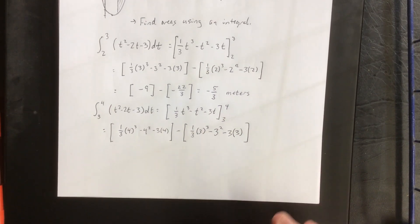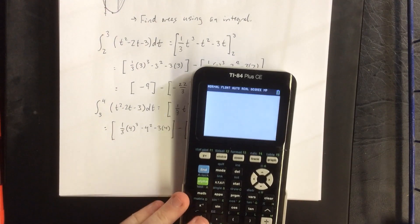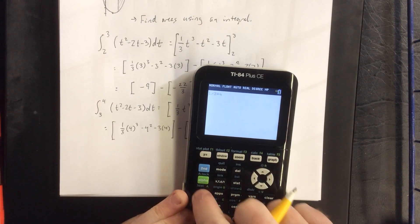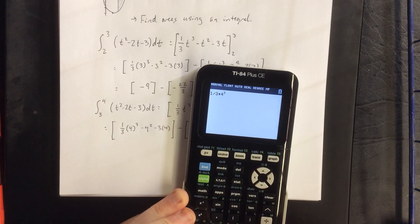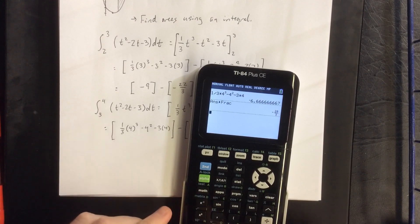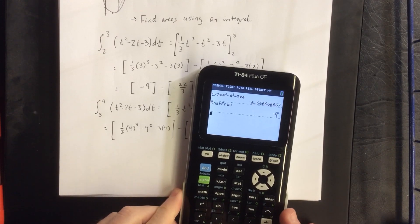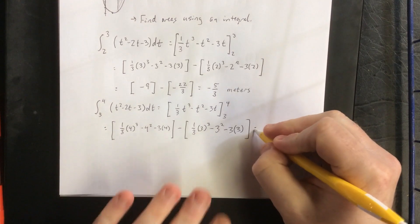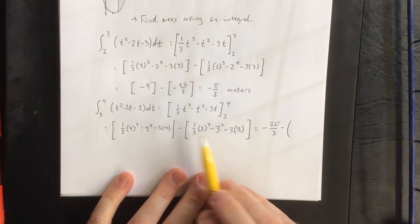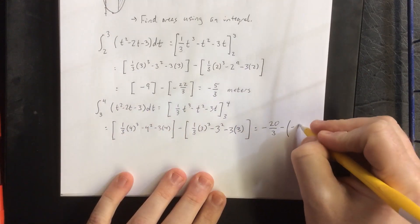Now with that in mind, I'm feeling just a little bit mentally lazy today, so I'm going to grab a calculator to help me out with the first set here. So ⅓ of 4³ - 4² - 3(4). That'll be -20/3.